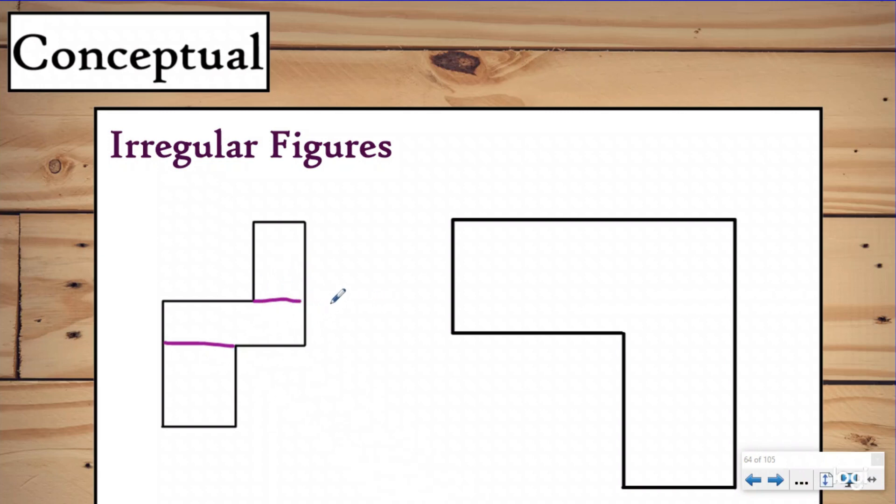Now you could also split them a different way if you wanted to. Maybe you wanted to split it here and here, and you have three separate rectangles. That's a good thing about the irregular figures we're going to be dealing with—you will always be able to split them up into rectangles. So here we could split it vertically or we could even make it three pieces and split it this way. And here we have one, two, three rectangles and squares that make up our irregular figure.